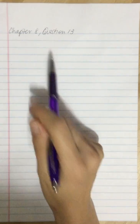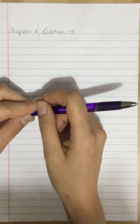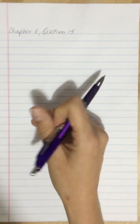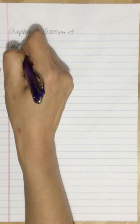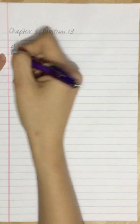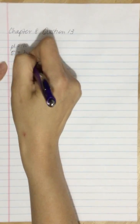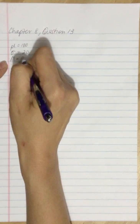Chapter 8, question 13. A random sample is selected from a normal population with a mean of 100 and a standard deviation of 20. After a treatment is administered to the individuals in the sample, the sample mean is found to be 96.